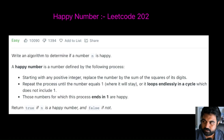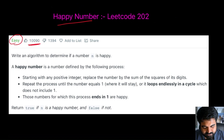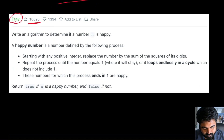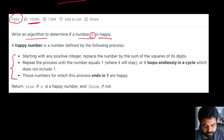The LeetCode problem we are going to solve now is called Happy Number. This is an easy problem and also an extremely well-liked problem. The statement is quite straightforward — we need to write an algorithm to determine if the given number n is a happy number or not, and we are given the conditions for how to define a number as happy.